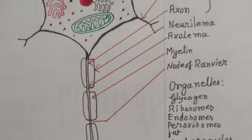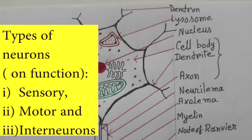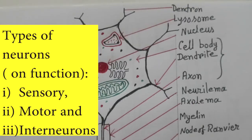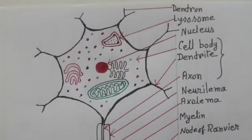Other types of neurons are multipolar, bipolar, and unipolar. In terms of functions, scientists classify neurons into three broad types: sensory neurons, motor neurons, and interneurons. Neurons are the core component of the brain, spinal cord, and peripheral nerves.